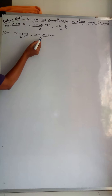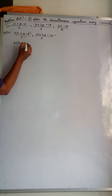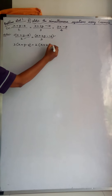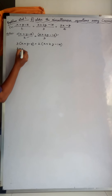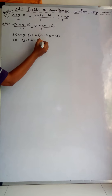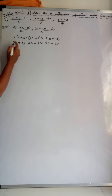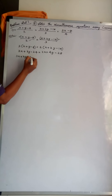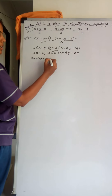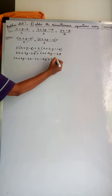First, we simplify by taking the first and second expressions. Multiply 3 into (X + Y - 8) equal to 2 into (X + 2Y - 14). Expanding: 3X + 3Y - 24 = 2X + 4Y - 28. Now bring the right-hand side terms to the left-hand side: 3X + 3Y - 24 - 2X - 4Y + 28 = 0.